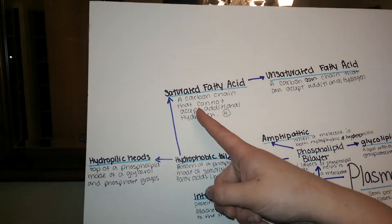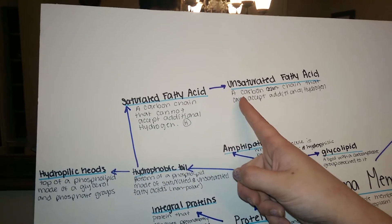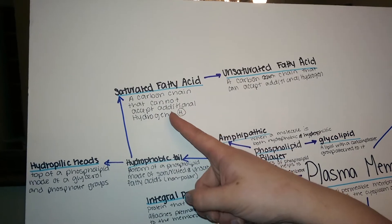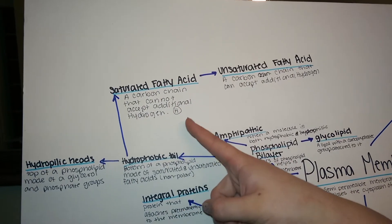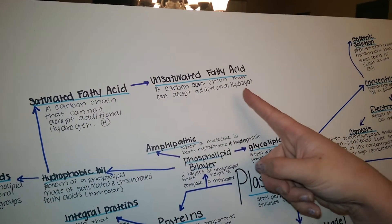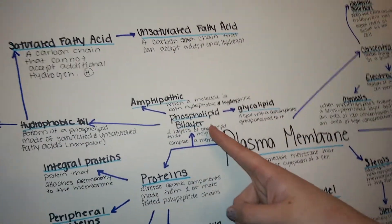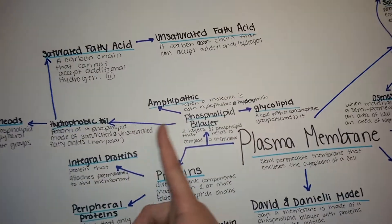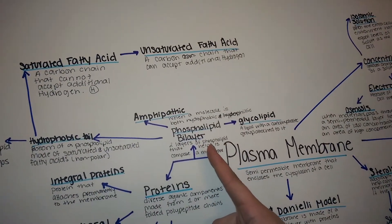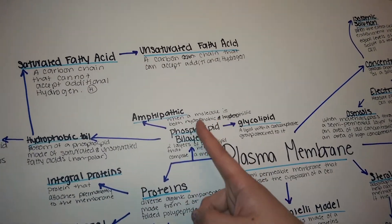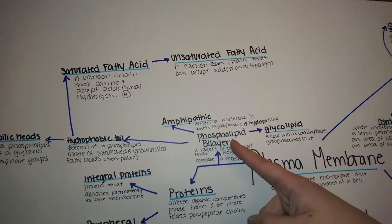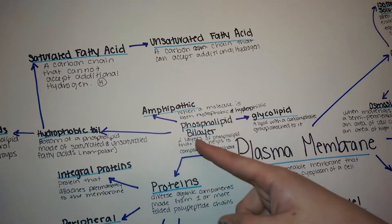The hydrophobic tail is made up of saturated and unsaturated fatty acids. A saturated fatty acid is a carbon chain that cannot accept additional hydrogen, whereas an unsaturated fatty acid is a carbon chain that can accept additional hydrogen. Back to the phospholipid — since the bilayer is made up of both hydrophilic heads and hydrophobic tails, when a molecule has both properties it is called amphipathic.